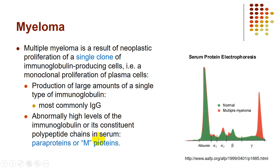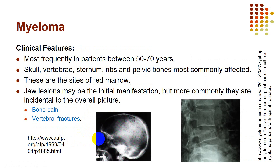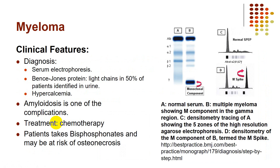Clinically, multiple myeloma shows punched-out appearances in bones containing red marrow: skull, ribs, sternum, pelvis. The jaws can be the initial site but are commonly part of a more disseminated picture. Patients present with bone pain and possible vertebral fractures. Comparing normal serum electrophoresis (albumin peak only prominent) with myeloma serum (albumin peak plus an M-spike in the gamma region) confirms the diagnosis.